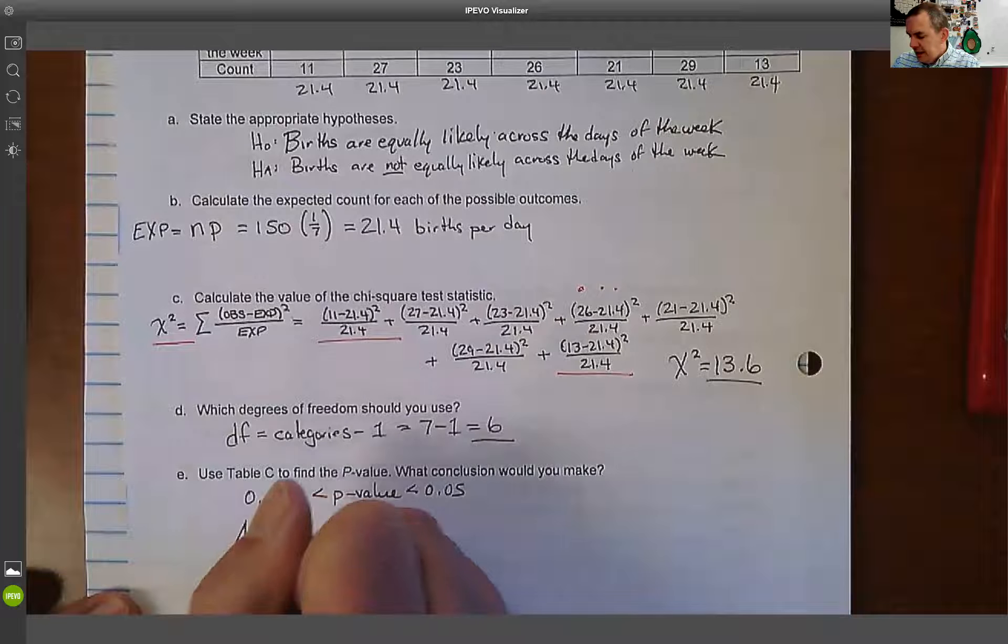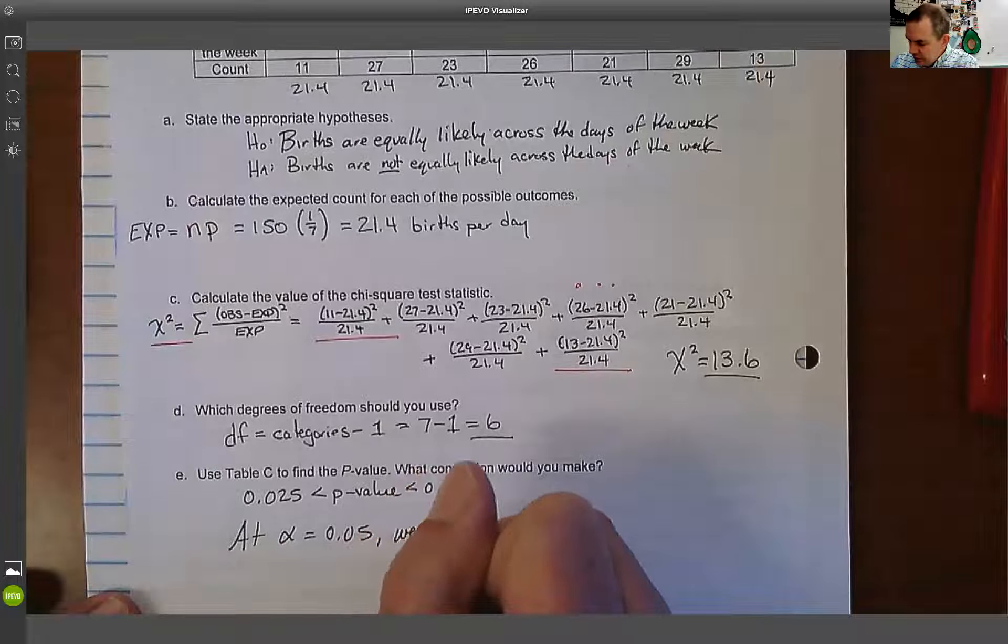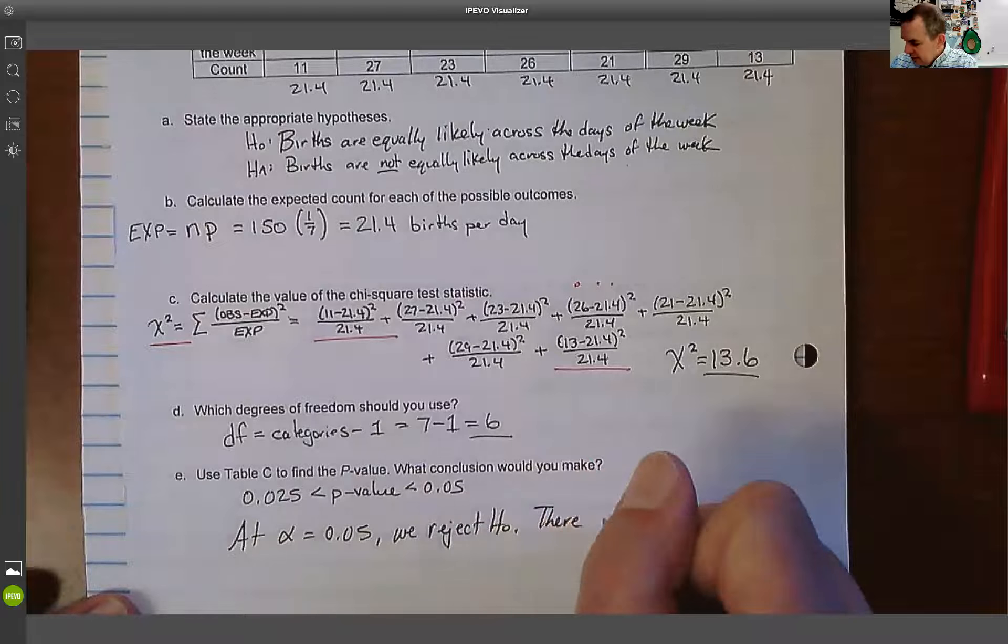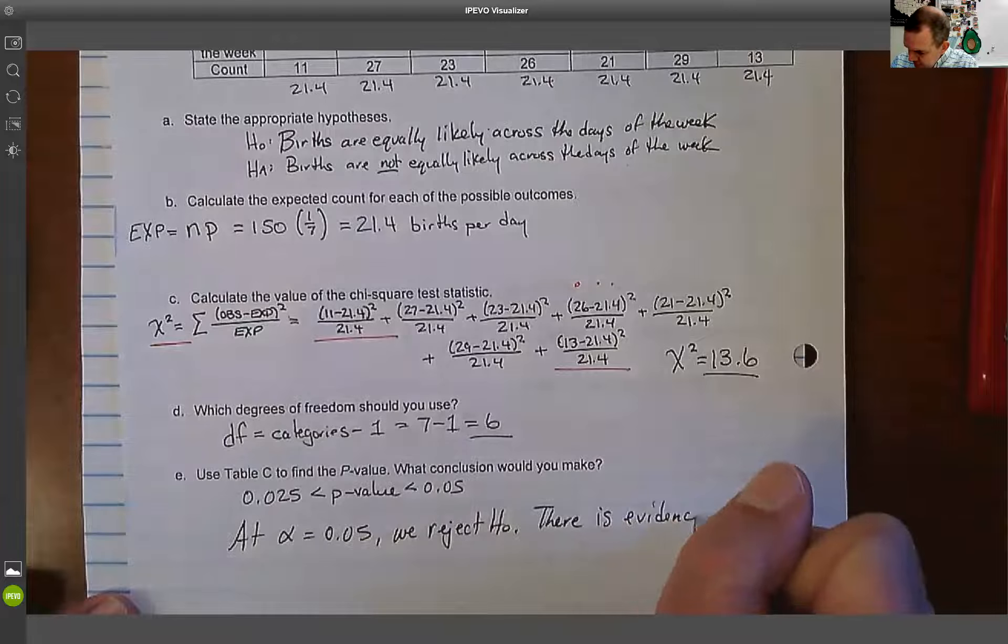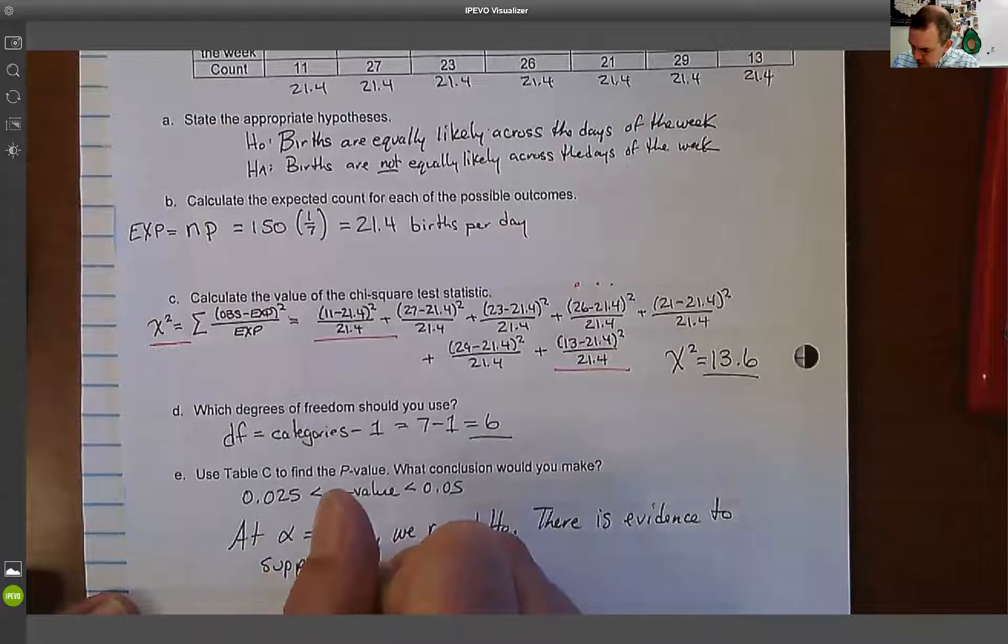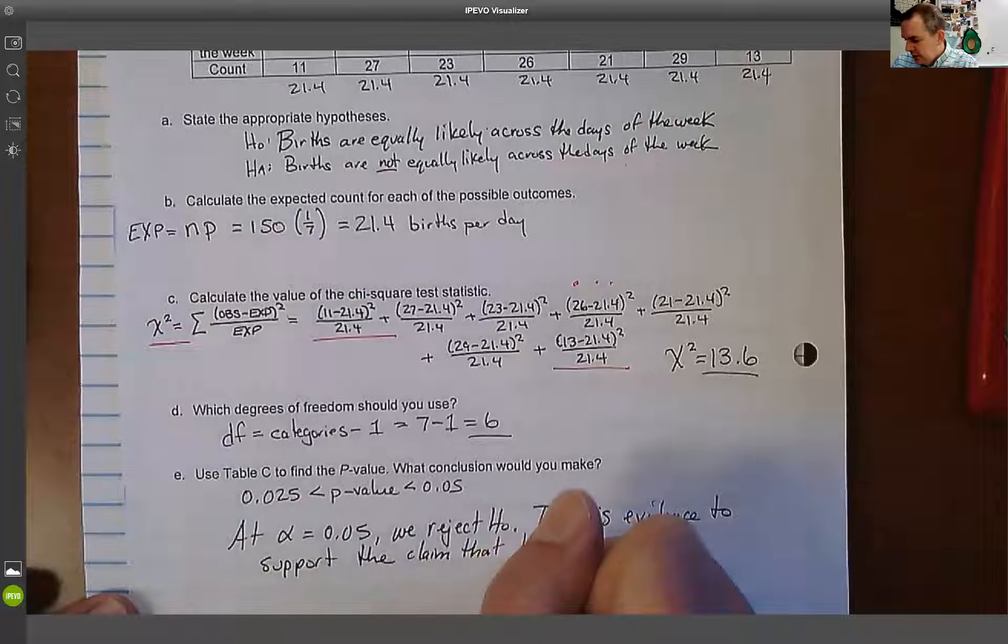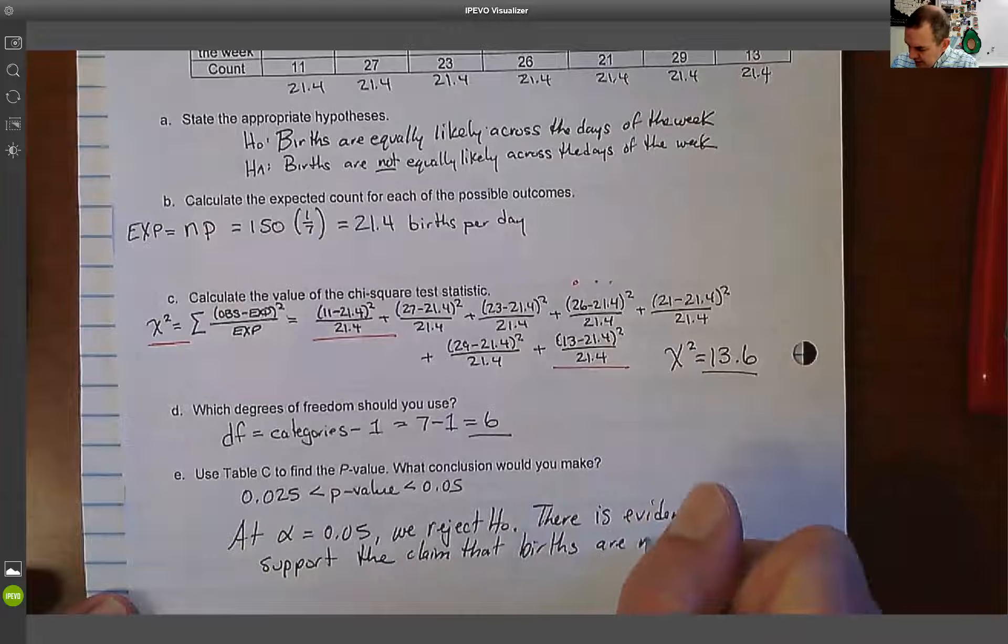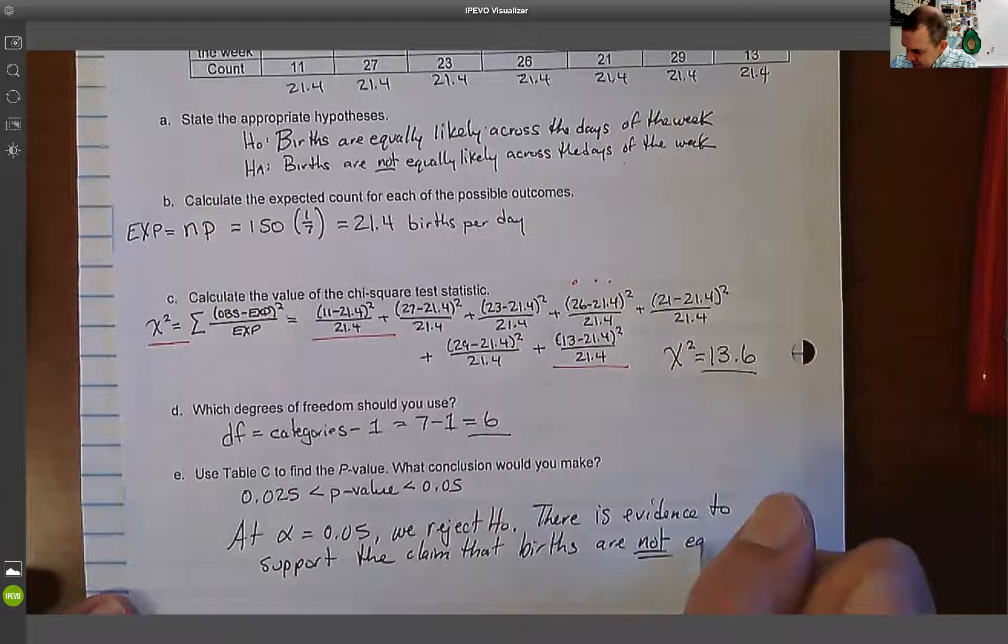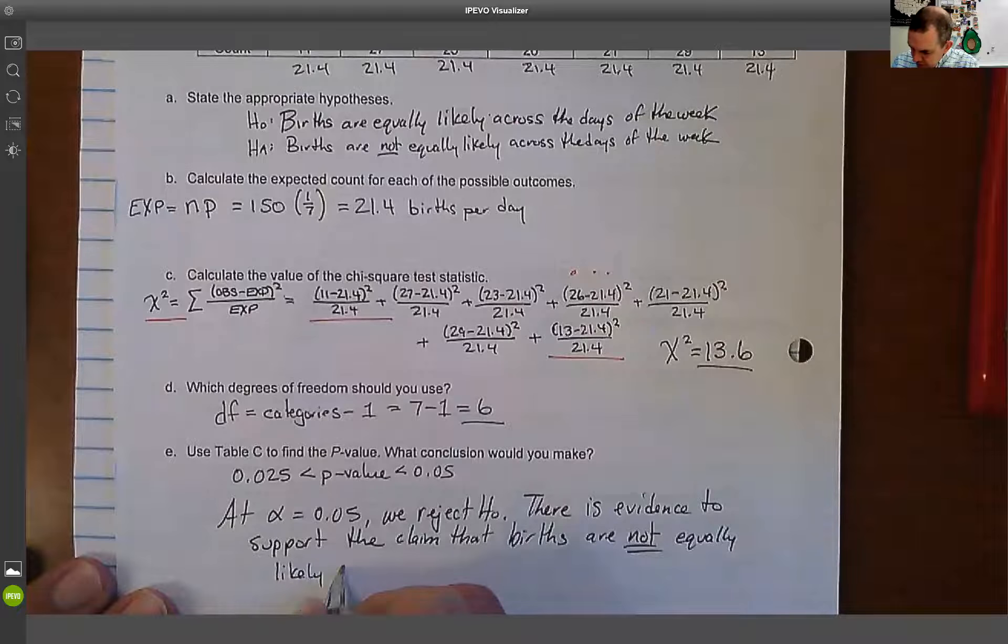So what that tells me here is that my p value is going to be between 0.025 and 0.05. So we would say at an alpha of 0.05, we'd reject the null hypothesis. There is evidence to support the claim that births are not equally likely across the days of the week.